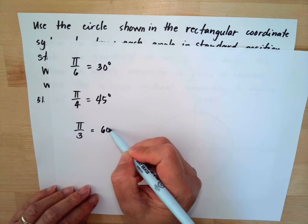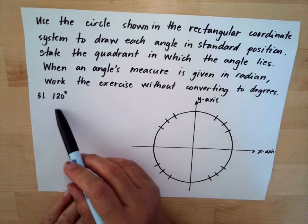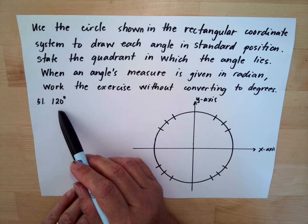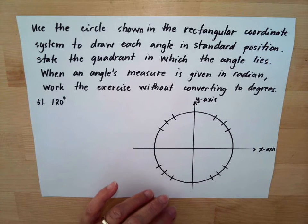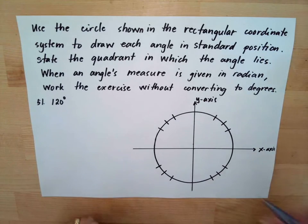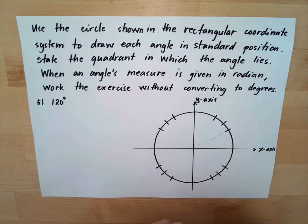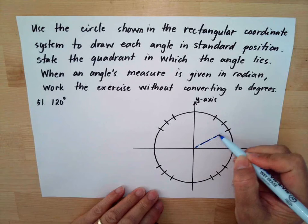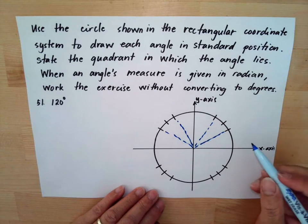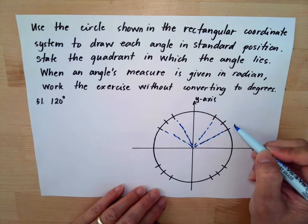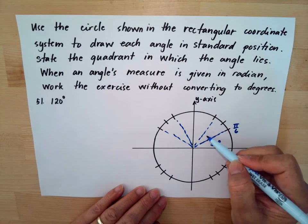Now, if you take note, 120 is divisible by 30. So we can mark these 30-degree lines, the π/6 increments. So if this is π/6, meaning this is equivalent to 30 degrees, then you add another 30 degrees.